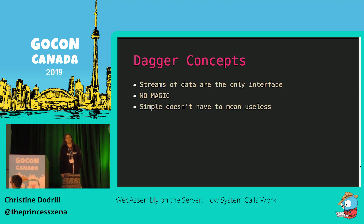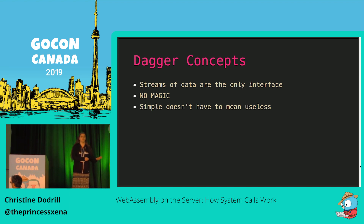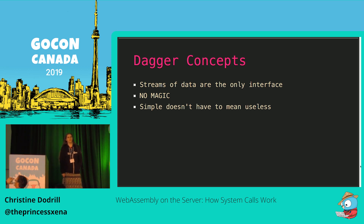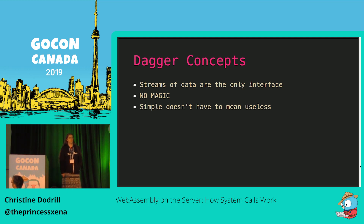Unix has a concept of everything being a file, and Dagger takes this like three steps farther than even Plan 9 did, where everything is a stream. Streams of data are the only interface, and there's basically no magic as possible. Another core concept is that simple doesn't have to mean useless. You can do HTTP client code in less than like 640k of RAM, which as Bill Gates said, should be good enough for anyone.